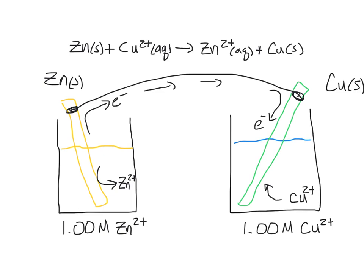If we allowed this reaction to continue as drawn, we'd accumulate a bunch of positive charges on the zinc side and a bunch of negative charges on the copper side. And we know that that's very unlikely that we can allow that to happen, so we have to figure out some way to balance the charge. The way we do that is by adding a salt bridge.